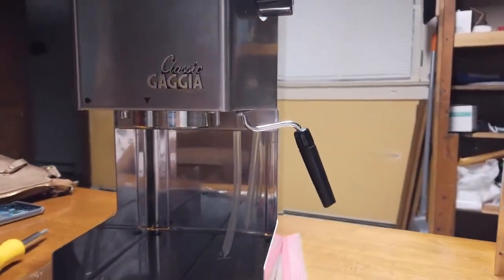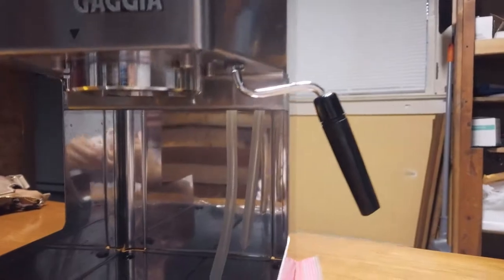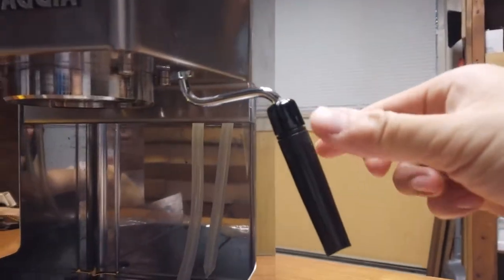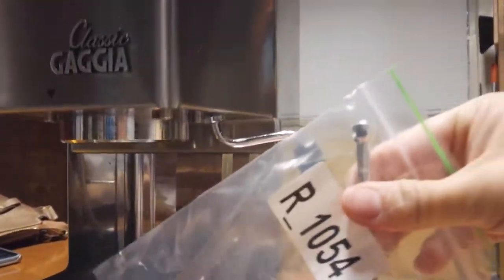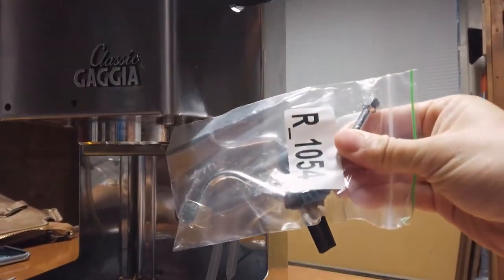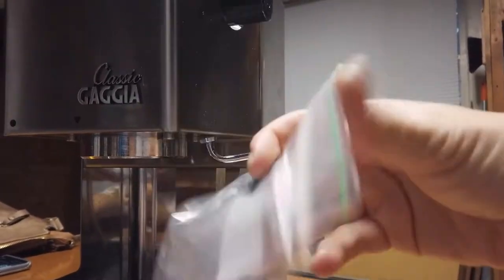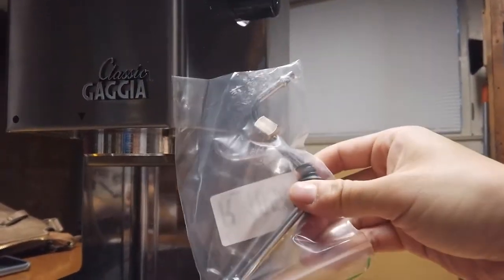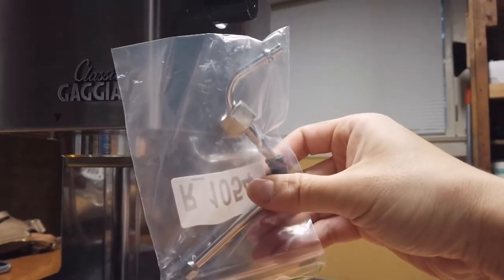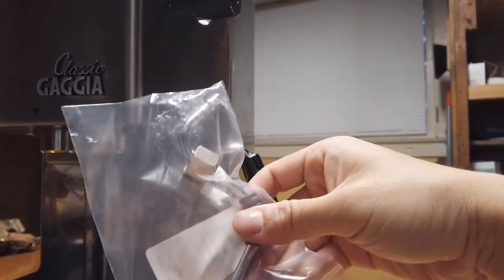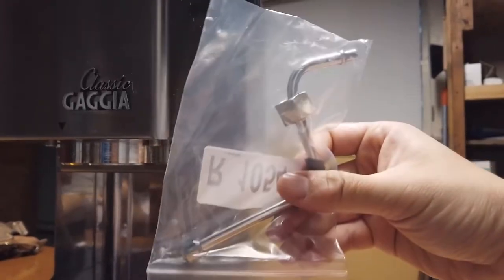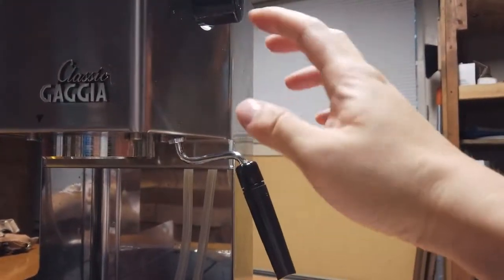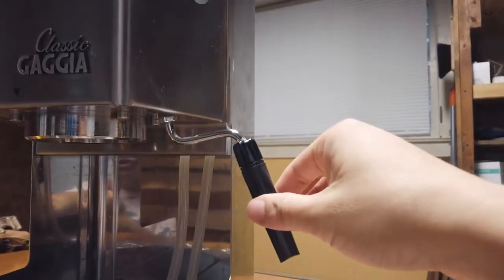In this video we're going to switch out the manual or auto frothing wand from the Gaggia Classic into a manual steaming wand from the Rancilio espresso machine. I bought this as a spare part online for about $23, compared to the original Gaggia Classic Pro steaming wand which costs almost $50 to replace.